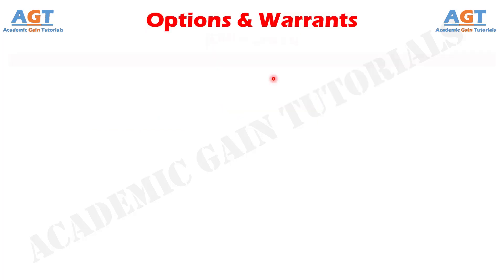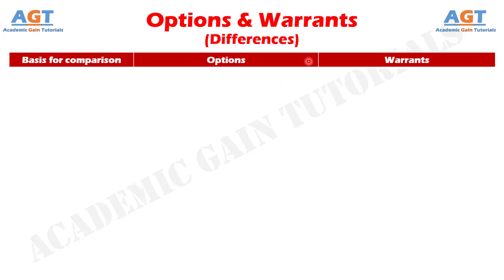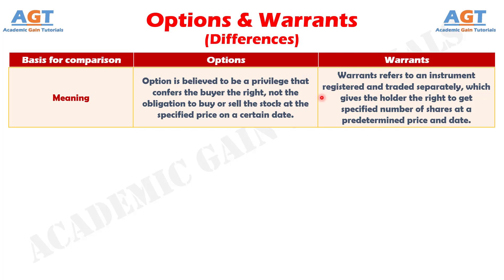Let's look into the basic differences between options and warrants in a tabular form. Difference number 1: the option is the agreement between parties wherein the buyer possesses the right, not the obligation, to buy or sell the stock at the specified price on a certain date. Whereas a warrant is an instrument registered and traded separately, which gives the buyer the right to get a specified number of shares at a predetermined price and date.